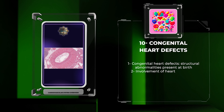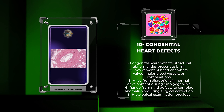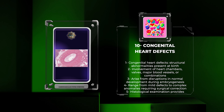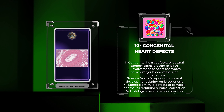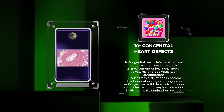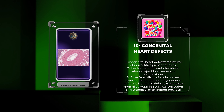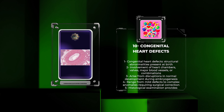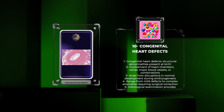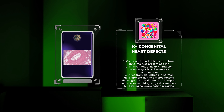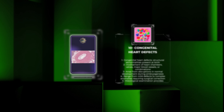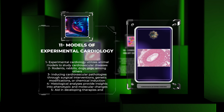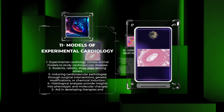Congenital heart defects are structural abnormalities of the heart present at birth, involving the heart chambers, valves, major blood vessels, or a combination of these. They arise from disruptions in the normal development of the cardiovascular system during embryogenesis, ranging from mild defects not requiring intervention to complex anomalies requiring surgical correction. Histological examination of congenital heart defects provides insights into the underlying pathophysiology.